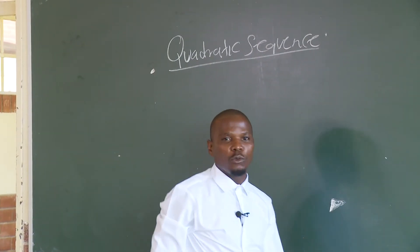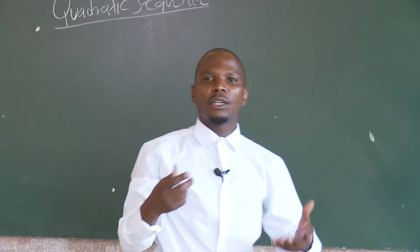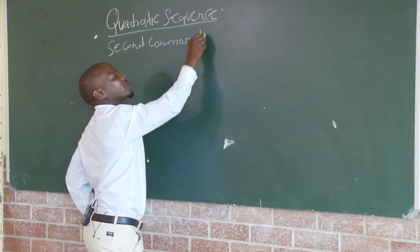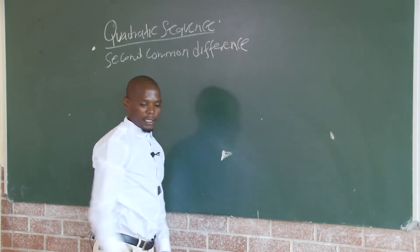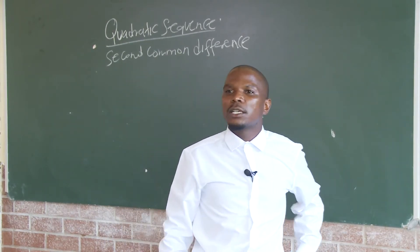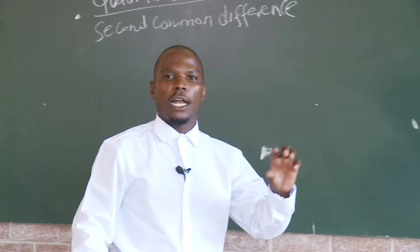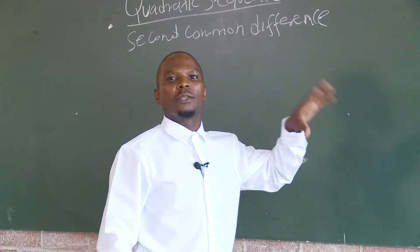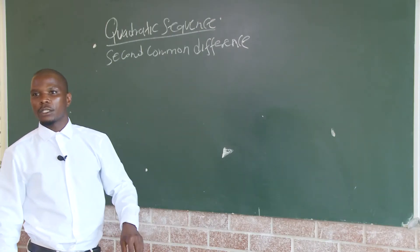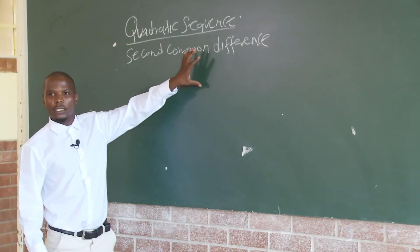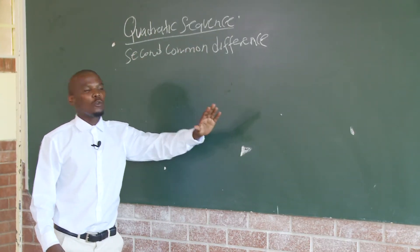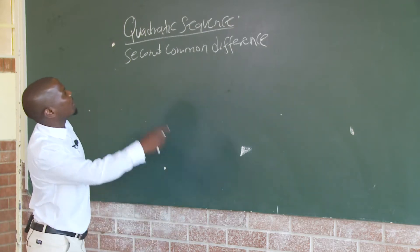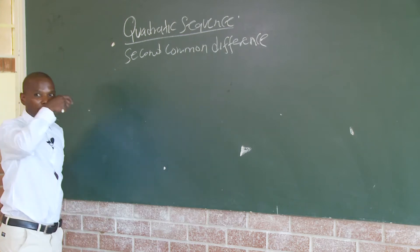For a quadratic sequence, we identify it by the second common difference. Remember, if it is an arithmetic sequence, we identify it by the first difference. For a geometric sequence, we look at the common ratio. For a quadratic sequence, we look at the second common difference.